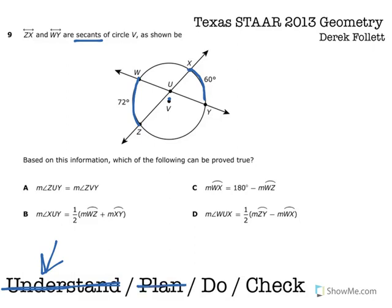Okay, so A says the measure of angle ZUY, so that would be this angle right here, equals the measure of angle ZVY. So that would be this central angle here. Well, I think it's pretty clear that the central angle is going to be bigger, greater than ZUY, so I'm going to rule that one out.